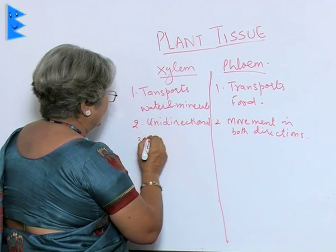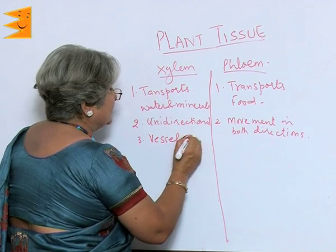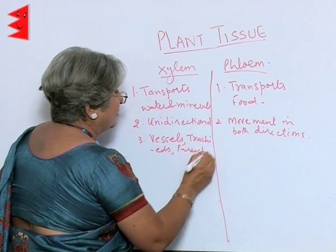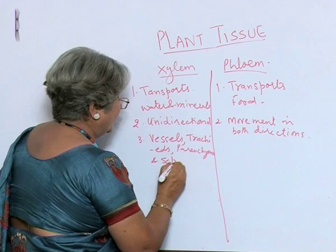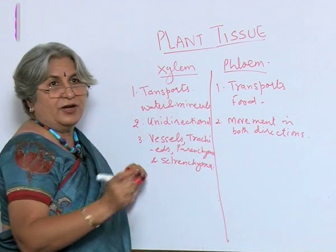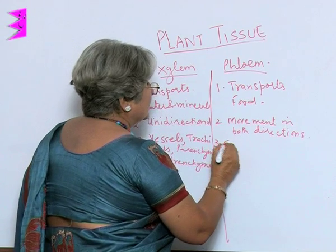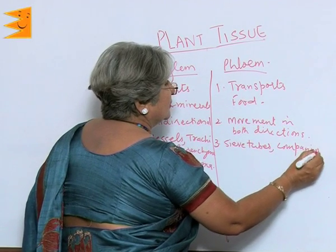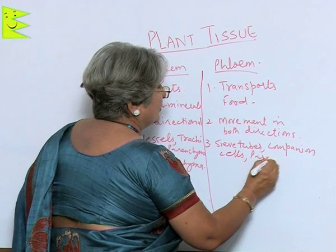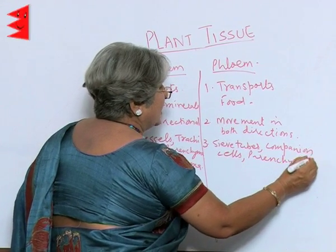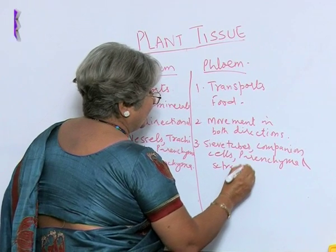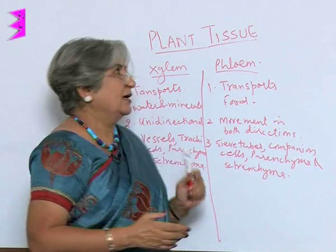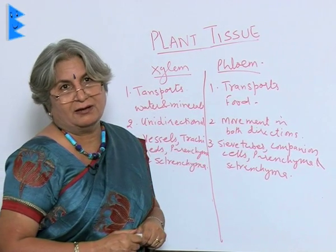Xylem is made up of vessels, tracheids, phloem fibers, and sclerenchyma. While phloem is made up of sieve tubes, companion cells, parenchyma, and sclerenchyma. Most of the phloem cells except fibers are living, and most of the xylem cells except the parenchyma are dead.